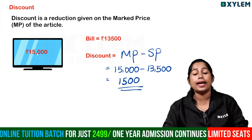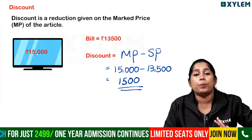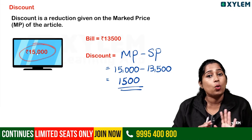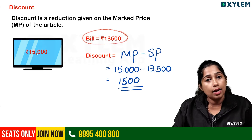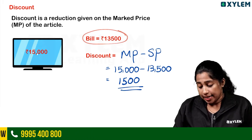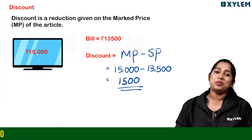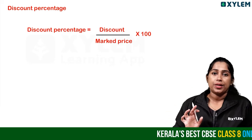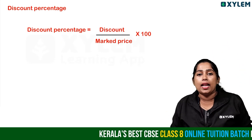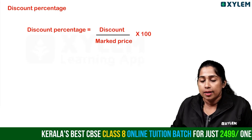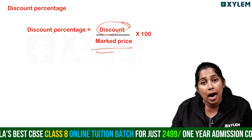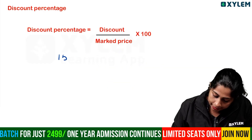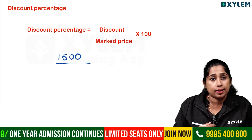The discount is 1,500 rupees. When you go to buy a TV and you save that money, that is the discount you get. The discount amount here is 1,500 rupees. Now let's find the discount percentage. Discount percentage equals discount amount divided by marked price into 100.